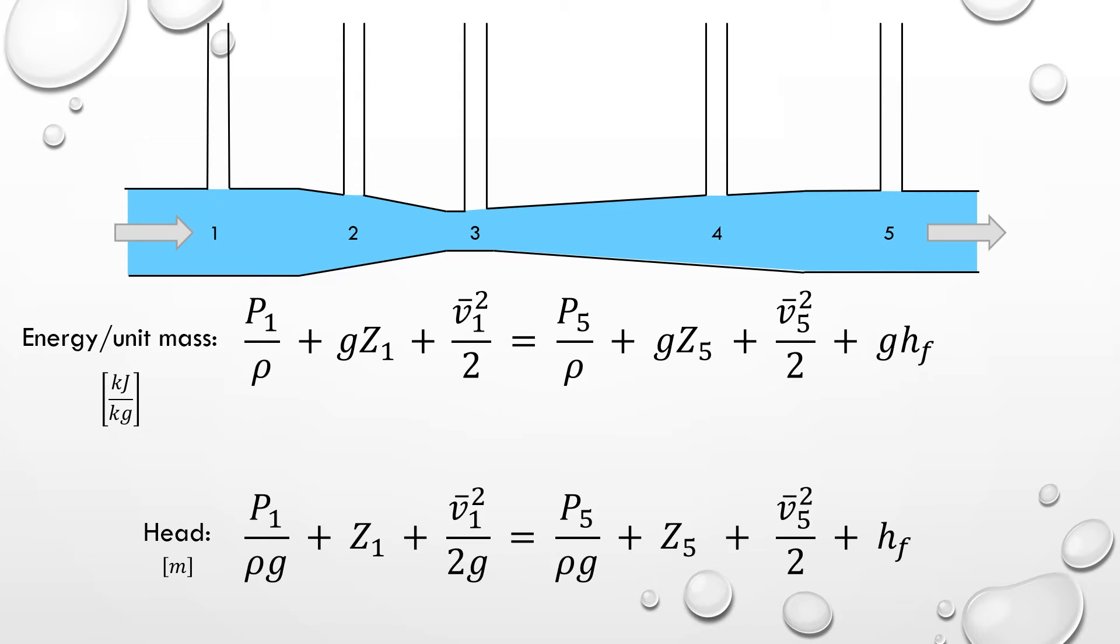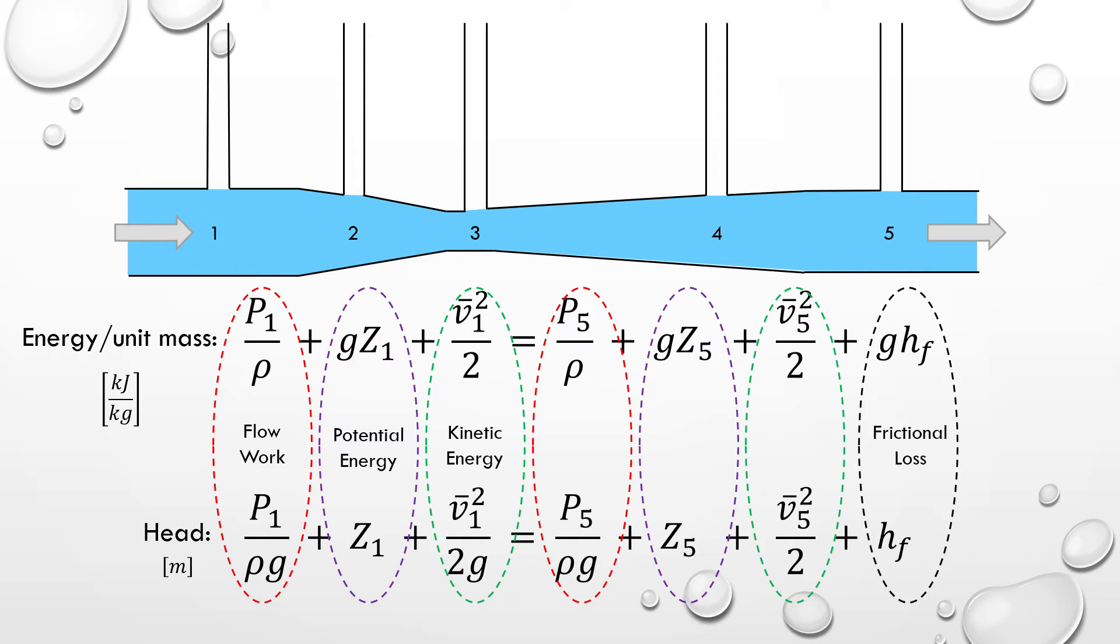or in terms of pressure, velocity, and liquid heads, as shown below. Remember that both forms of the mechanical energy equation contain terms representing flow work, potential energy, kinetic energy, and frictional losses.